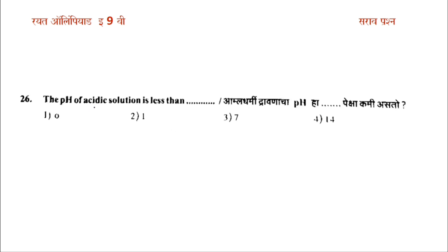The pH of an acidic solution is less than 7. A larger pH number is higher.